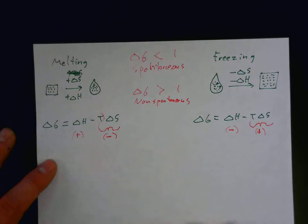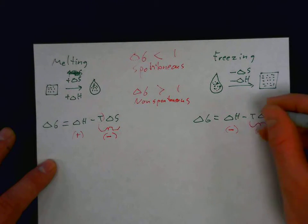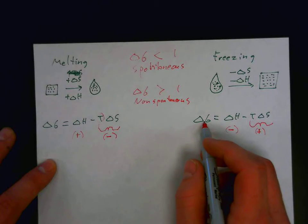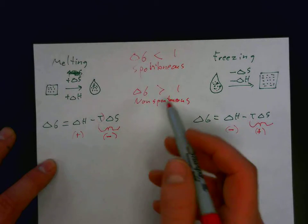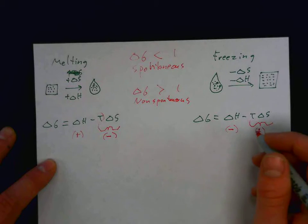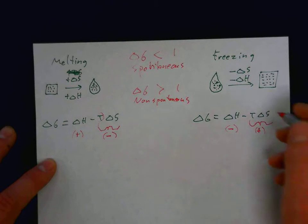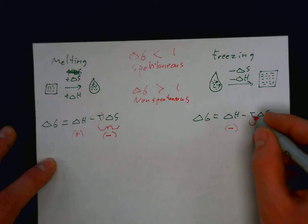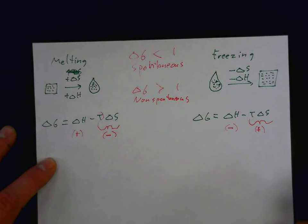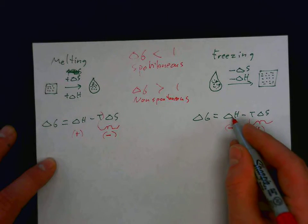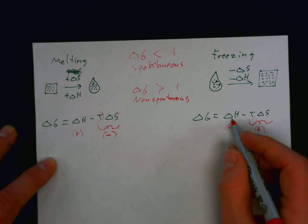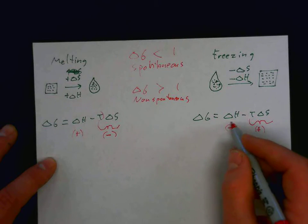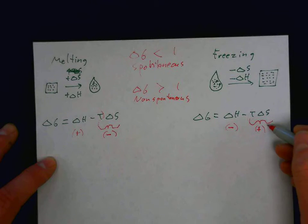So, it comes down to the temperature once again to determine whether the free energy would be negative or positive. So, when the temperature is low, that means that the enthalpy has a greater effect on delta G, or causes the delta G to be negative as opposed to positive.